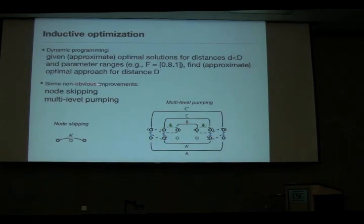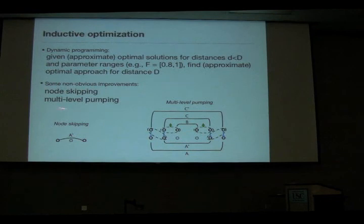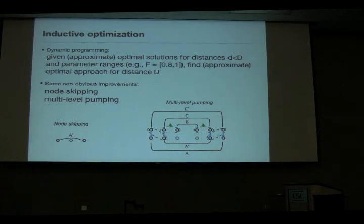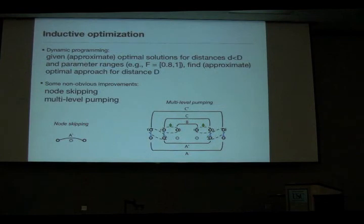More generally, I'm finding approximately optimal solutions for a given distance. The computer also allows me to find some non-obvious improvements. One is so-called node skipping, in which I don't bother creating pairs of length over two and joining them, but instead start by creating pairs of slightly shorter length that are in turn purified by pairs of slightly shorter length again — removing connection steps and improving the bandwidth.